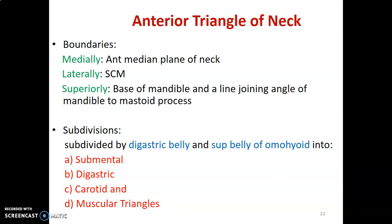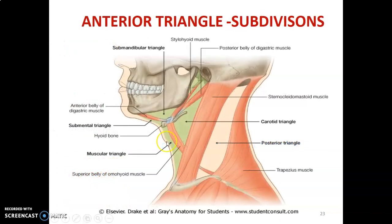The anterior triangle is divided into four triangles: the submental triangle, digastric triangle, carotid triangle, and muscular triangle. This division is carried out by the digastric muscle and the superior belly of omohyoid. The omohyoid muscle has a superior belly and inferior belly.